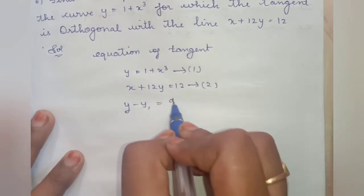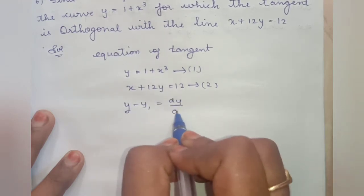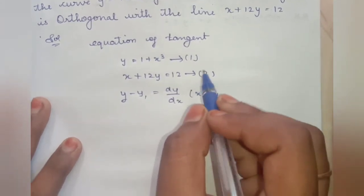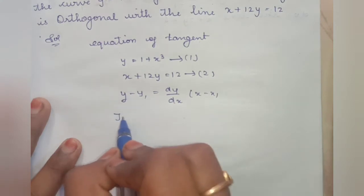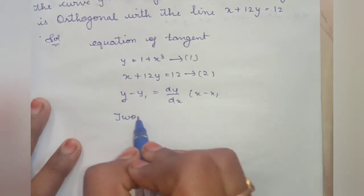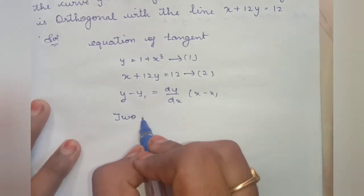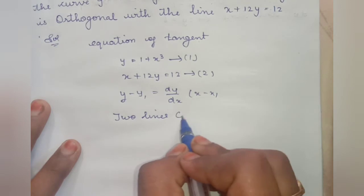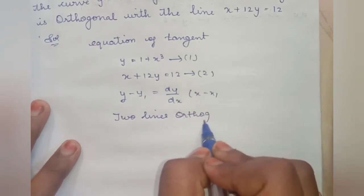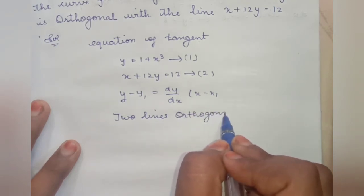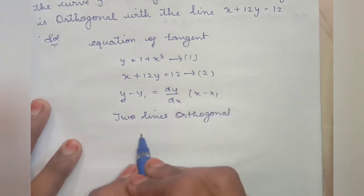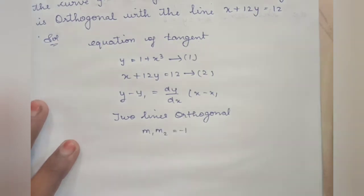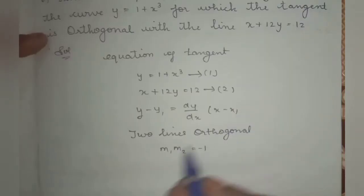The equation of tangent to the curve is: y minus y1 is equal to dy/dx times x minus x1. Two lines are orthogonal when m1 times m2 is equal to minus 1.